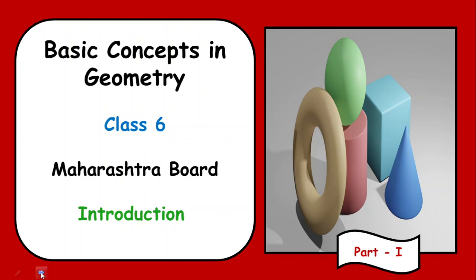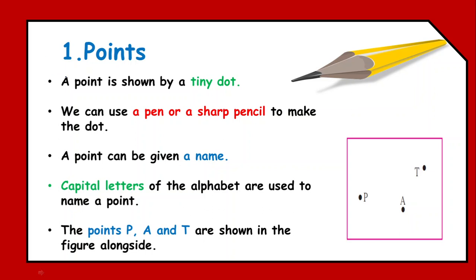Let's see what are the contents. The first content what we are supposed to learn is point. A point is shown by a tiny dot. Whenever you use a pen or a sharp pencil and press it on a paper, the thing which you get is called a point, or simply the dot created by a pointed object is called a point.